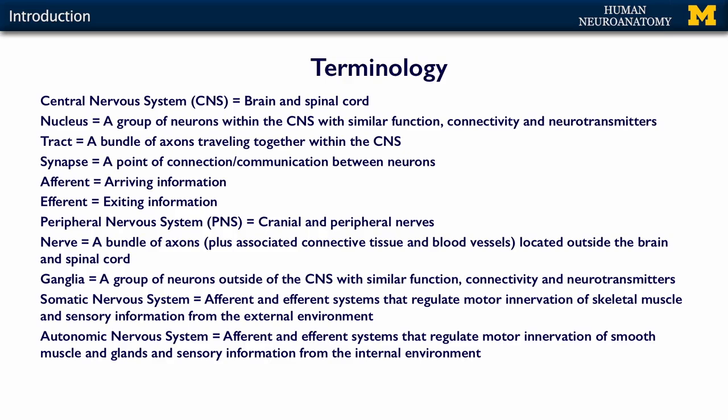The peripheral nervous system is all of the stuff that's not inside the bones. Those are your cranial nerves that come out to innervate structures and targets in your head and neck, and your spinal nerves that come out of your spinal cord and go to all of your muscles. A nerve is similar to a tract except it's outside the CNS — a bundle of axons with their associated connective tissue elements and blood vessels, located outside the brain and spinal cord.